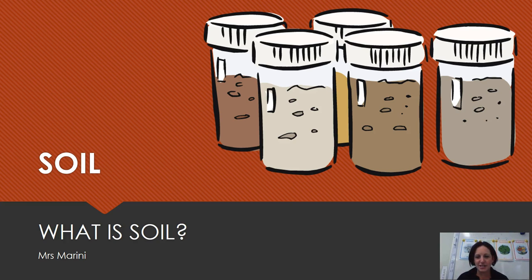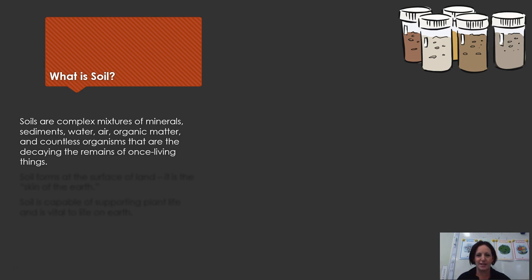Hello boys and girls, this is the first video all about soil — the first in the series. This one is called 'What is Soil?' So what is soil? Well, soil is amazing and it's a complex mixture of minerals, sediments, water, gas, air, organic matter, and countless little organisms that are decaying the remains of once-living things in the soil, like leaves, twigs, and dead insects.